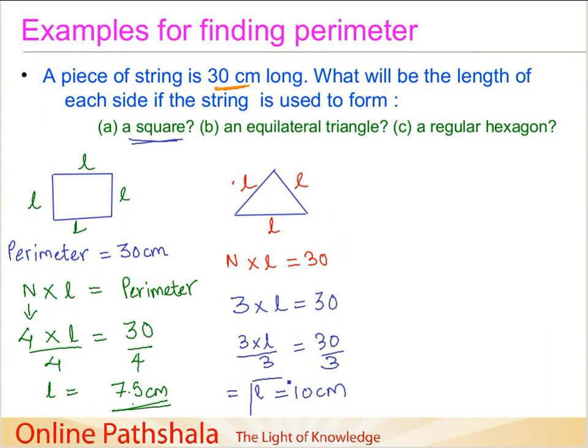Therefore, the length of the side of an equilateral triangle that we form using this string will be 10 cm. Now let us take a regular hexagon. When I say a regular hexagon, hexagon has 6 sides. So I have tried to make it as regular as possible, and the length L is what we have to find out.